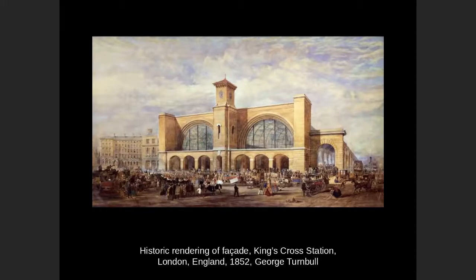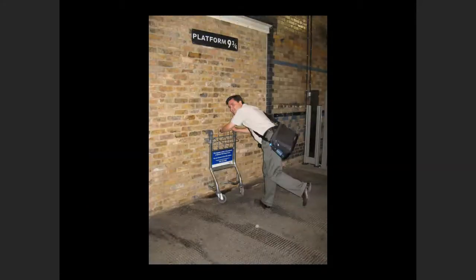King's Cross is also famous for something else — for all of you who have read or watched the Harry Potter movies, you'll know there's the famous Platform Nine and Three-Quarters. If you visit, you can go to where the brick wall is and pretend like you're going to pass right on through.